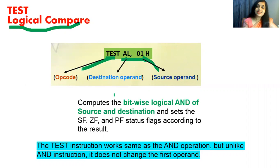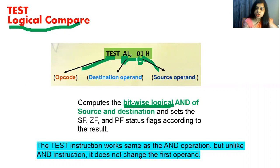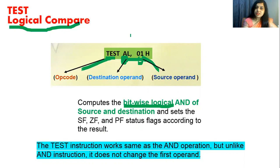The TEST instruction computes a bitwise logical AND of the source and destination operands, and then sets the sign flag, zero flag, and parity flag status flags according to the result. That means it first performs AND between source and destination, and based on the result, these three flags will either set or reset.